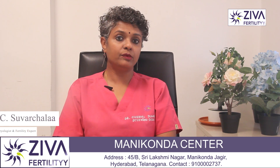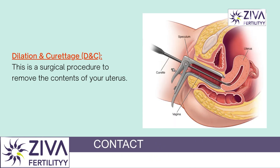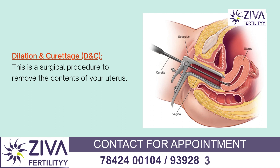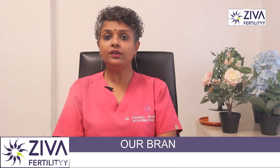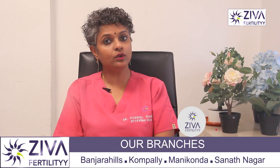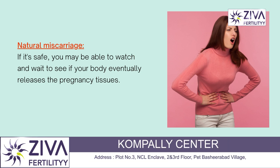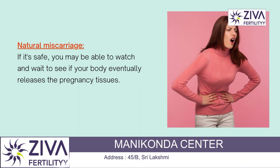Now, what are the treatment options? Dilation and curettage, or D&C, is a surgical procedure to remove the contents of your uterus. A natural miscarriage is also another treatment option where it is safe. You may also be able to watch and wait to see if your body eventually releases the pregnancy tissue and you have breakthrough bleeding.